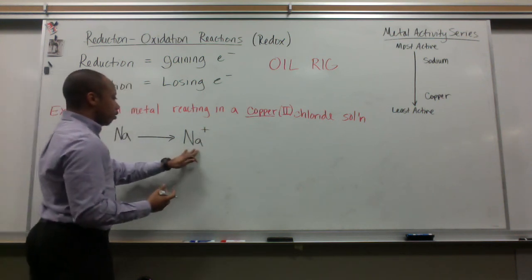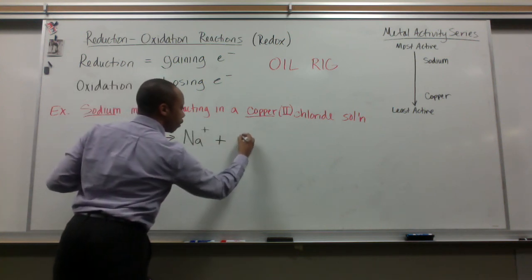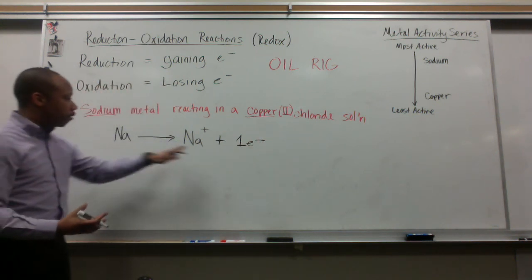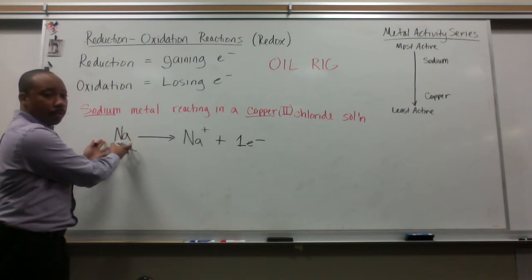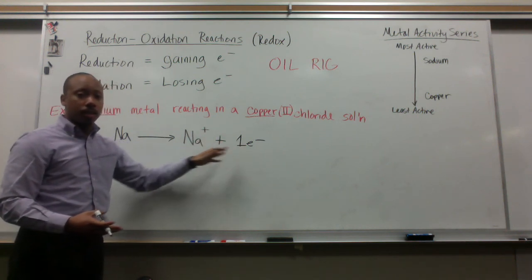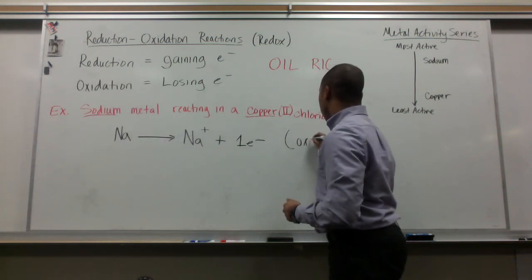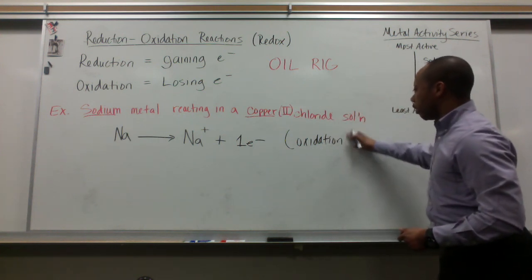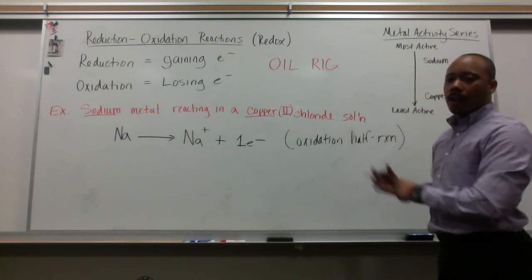It becomes Na1+, and on this other side of the reaction, we have the one electron that it lost because these sides have to be balanced. This is a neutral atom of sodium, this is sodium cation plus the electron that it lost. This is our oxidation half reaction.